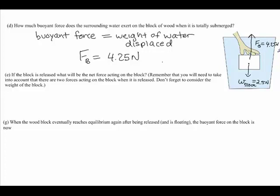At this point you can determine how much force the hand must be pushing down to keep the block submerged. The hand must push down to balance the forces. With 4.25 newtons upward and 2.5 newtons downward from the block's weight, the hand must exert a downward force of 1.75 newtons.